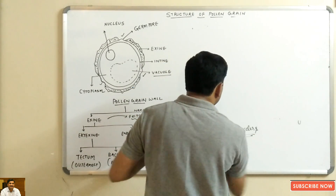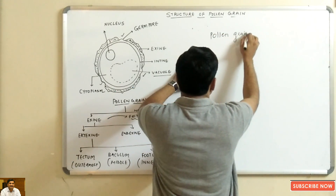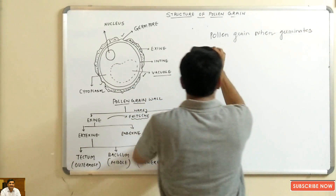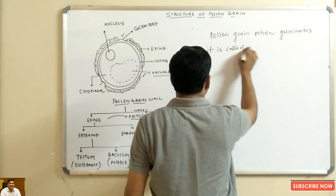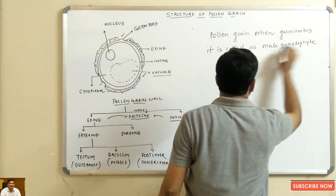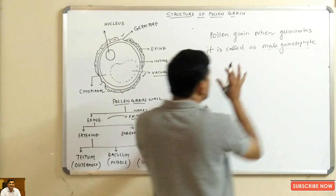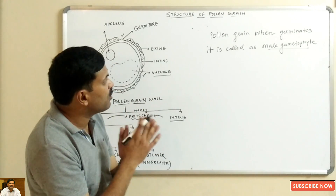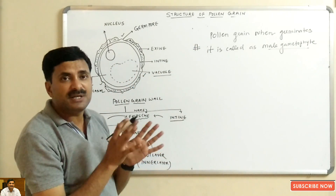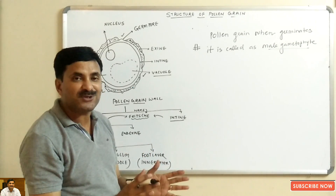Finally, you must know that when a pollen grain germinates, it is called a male gametophyte. A germinated pollen grain is called a male gametophyte. This was all about the description of a pollen grain. We will soon be coming with new videos — keep watching, thanks a lot.